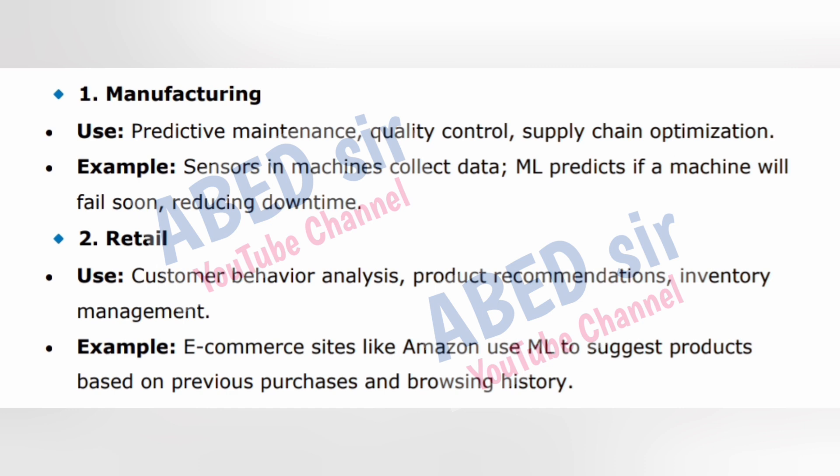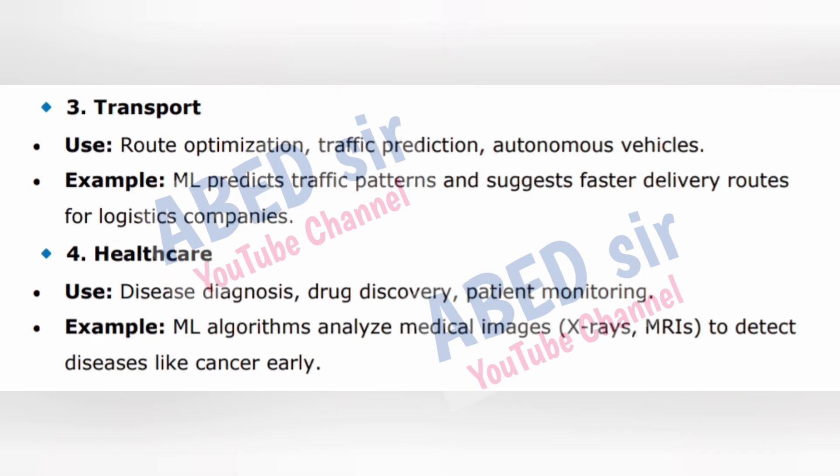Sector 2 — Retail: uses customer behavior analysis, product recommendations, inventory management. Example: e-commerce sites like Amazon use ML to suggest products based on previous purchases and browsing history. Sector 3 — Transport: uses route optimization, traffic prediction, autonomous vehicles. Example: ML predicts traffic patterns and suggests faster delivery routes for logistics companies.